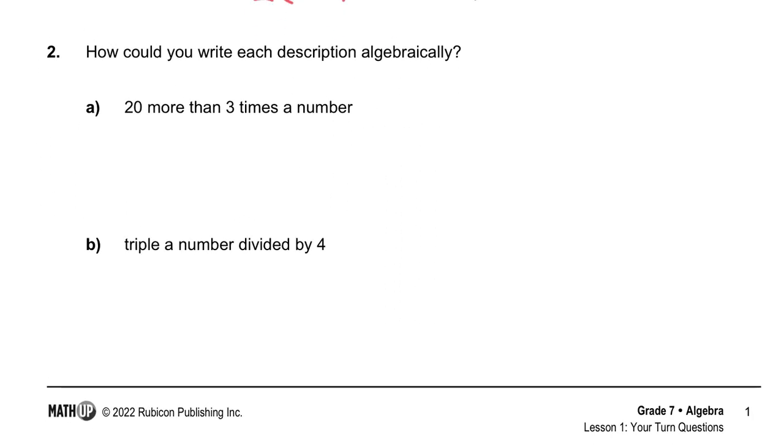How could you write each description algebraically? 20 more than 3 times a number. So, the first thing I'm going to do is, I would circle the key words in here. So, I'm just going to highlight more than. That means I'm doing a reversal, and it means I'm adding. More than means adding. So, I'm adding. And another one that I see is, I see we have times a number. So, times means multiply. And a number, we can give that the letter n this time.